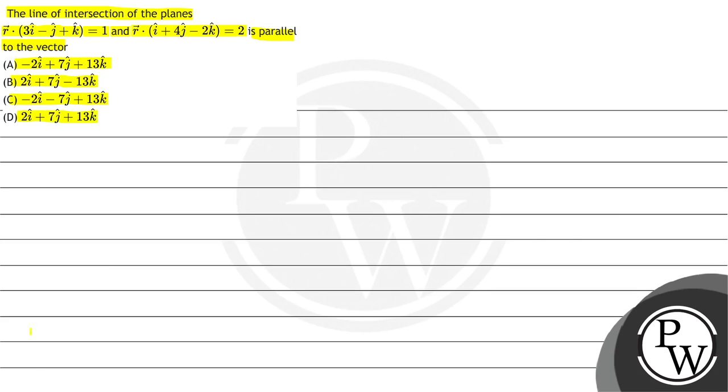So in this question, we have two planes given. We can see that r·(3i - j + k) = 1, suppose this is plane P1.